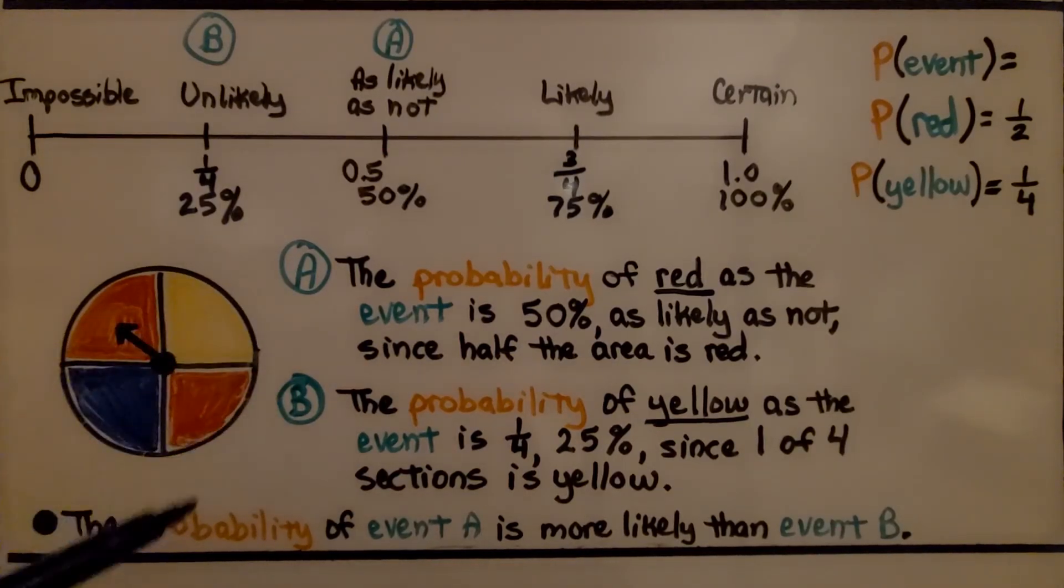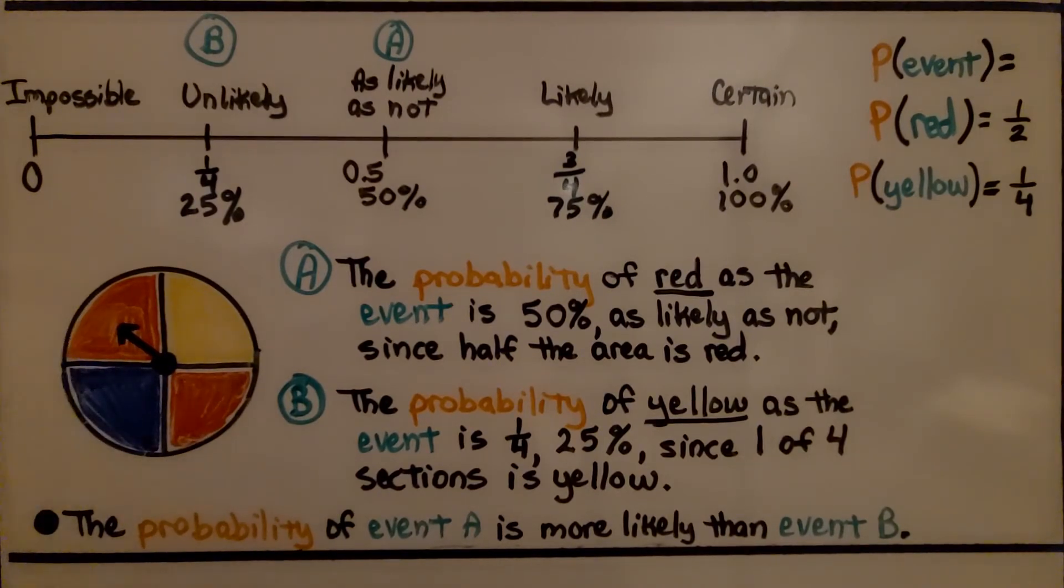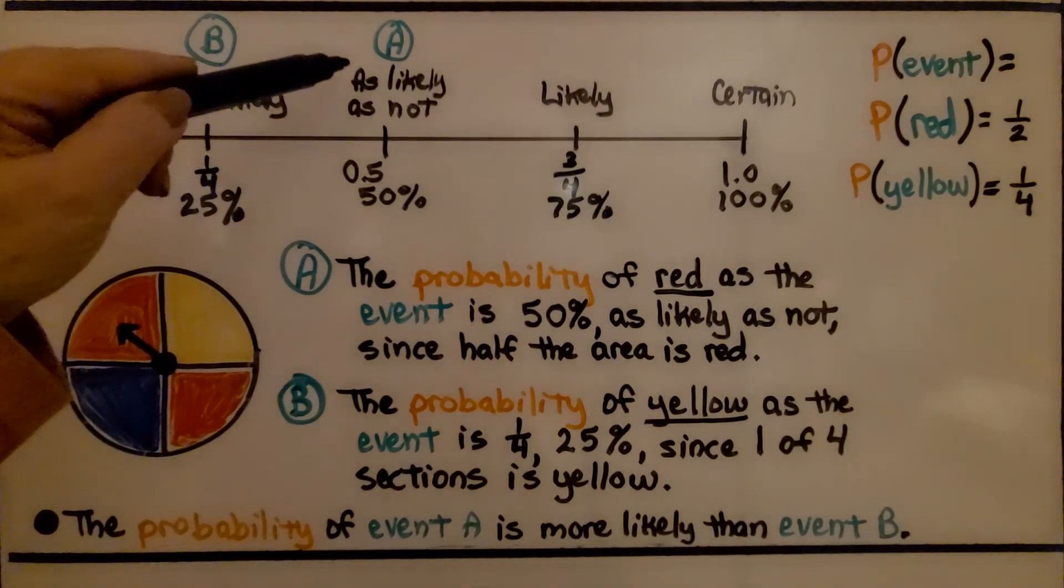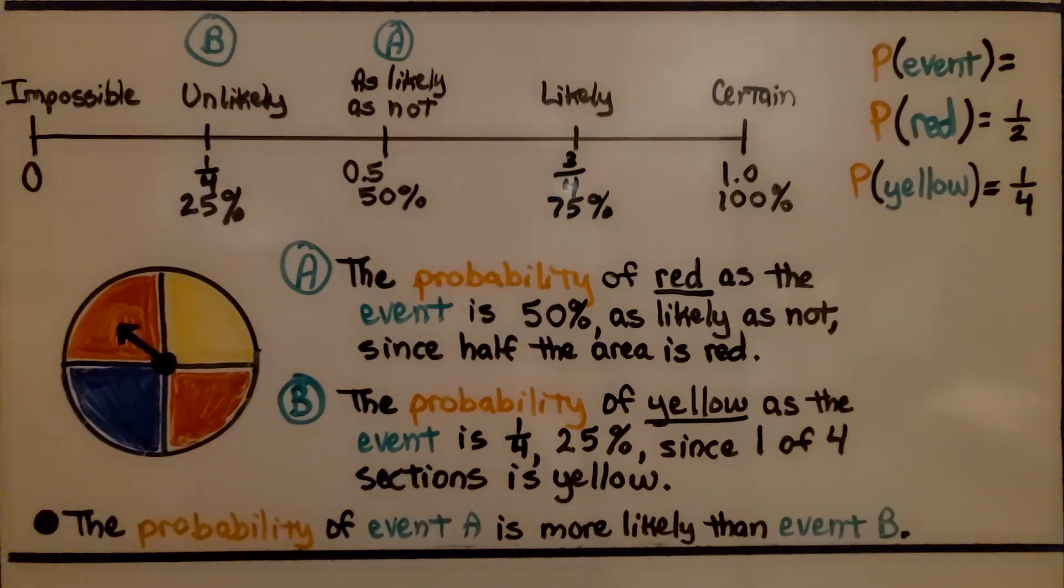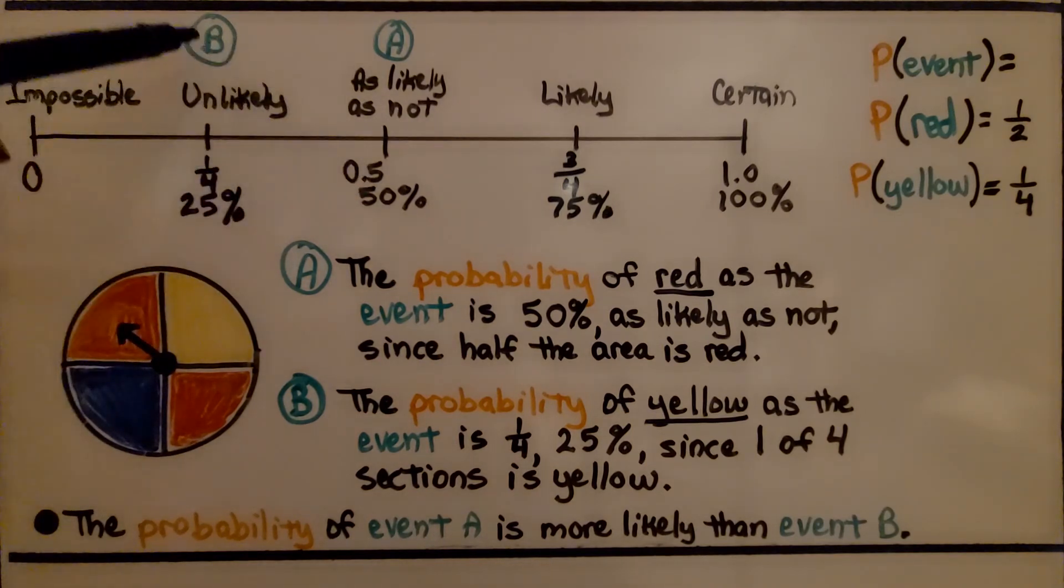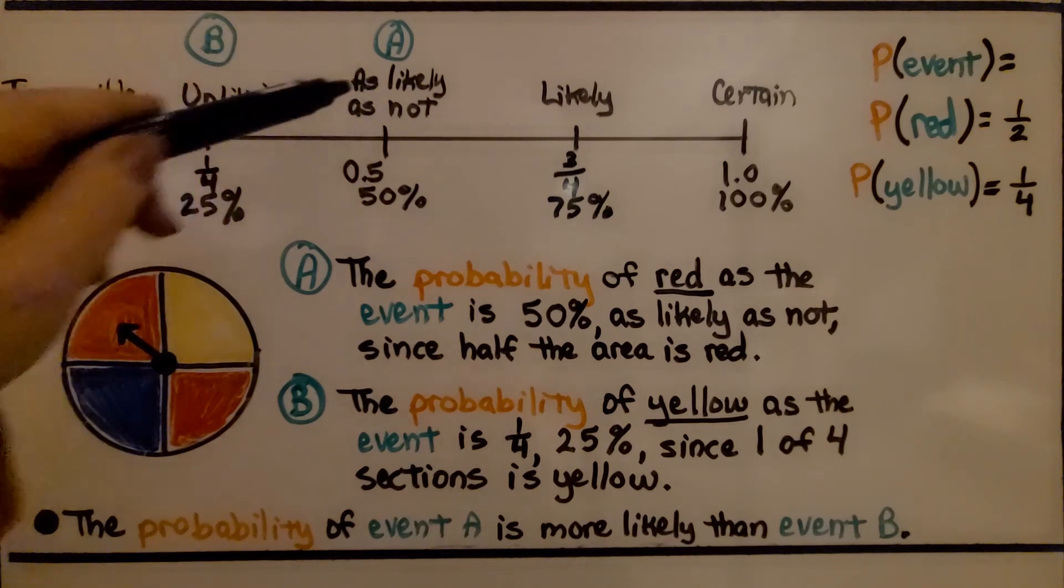Let's try a couple more. We have A, the probability of red as the event is 50%. It's as likely as not since half the area is red. We have four areas and two of them are red. Half the areas are red. So we have a 50% chance of spinning this spinner and it landing on red. It's as likely as not. It's 50%. The probability of yellow as the event is one fourth. We have one out of four areas. That would be 25% since one of four sections is yellow. The probability of event A is more likely than event B. A was 50% and B was 25%. It's more likely we'll get red than yellow.